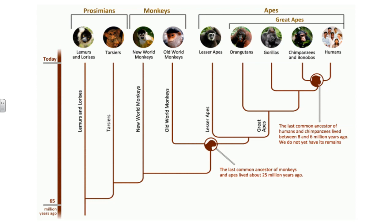Some of the earliest would be the relatives of the lemurs, the lorises, and the tarsiers, which developed somewhere around 50 million years ago. They got more highly developed about 30 to 40 million years ago with the evolution of the new world monkeys and the old world monkeys. About 25 million years ago there was a branch that went on to the much more complex apes, including the lesser apes such as the gibbons and the great apes such as orangutans, gorillas, chimpanzees, bonobos, and humans. Humans probably branched off somewhere between eight and six million years ago — we do not yet have those remains, sometimes known as the missing link.